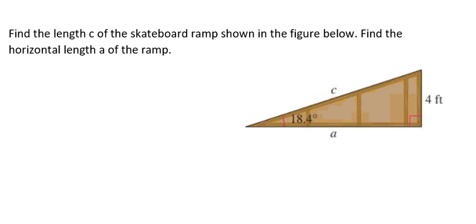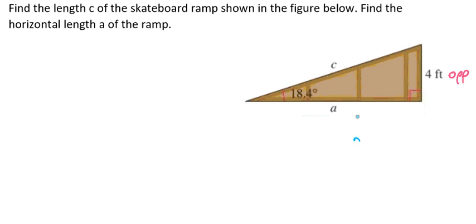Let's do one more example. So here, we're going to find the length C of the skateboard ramp shown in the figure below. Then we're going to find the horizontal length A of the ramp. So we have our angle of 18.4 degrees. So that tells us that this is going to be our opposite side, this is going to be our adjacent side, and C is going to be our hypotenuse.